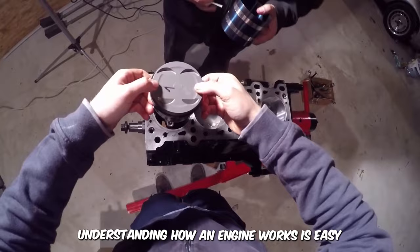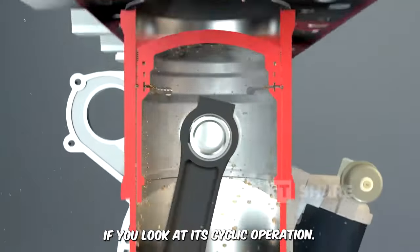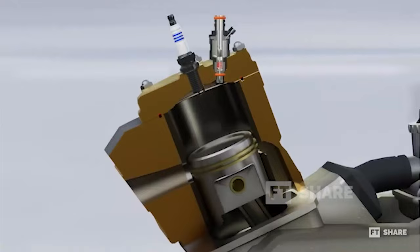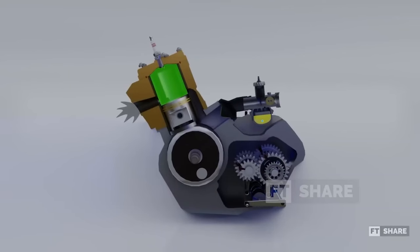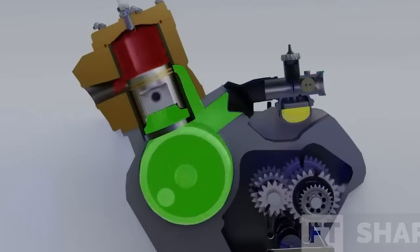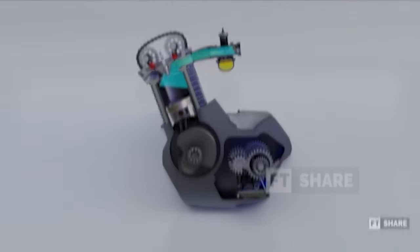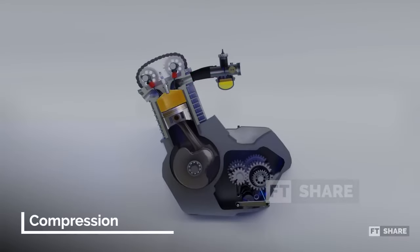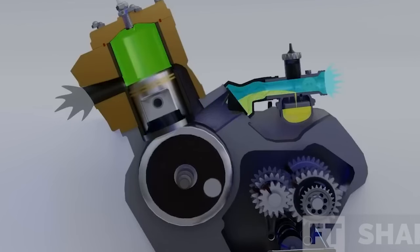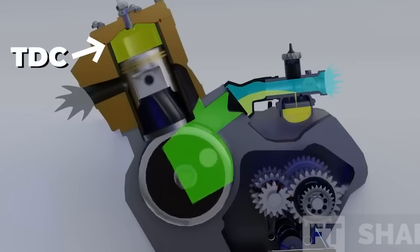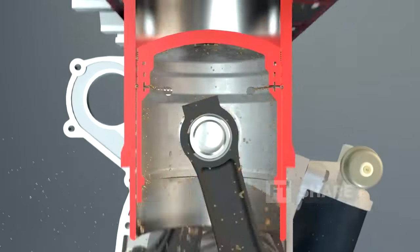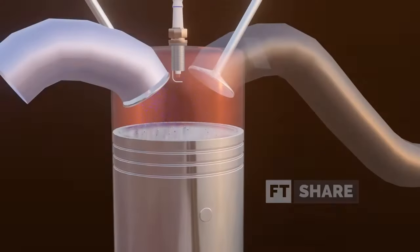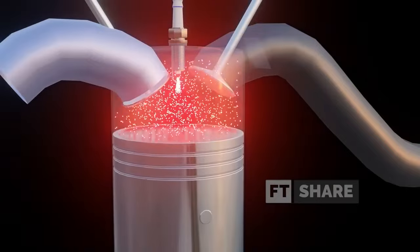Understanding how an engine works is easy if you understand the cyclic operation. The starting point of the two-stroke engine cycle is the piston, positioned at the bottom dead center, or BDC, in short. This initial phase sets the foundation for the subsequent events that define the engine's functionality. As the piston ascends, creating a vacuum in the lower part of the crankcase, the reed valve responds by opening. This action initiates the induction phase, drawing in a mixture of fuel, two-stroke oil and oxygen-rich air into the crankcase.